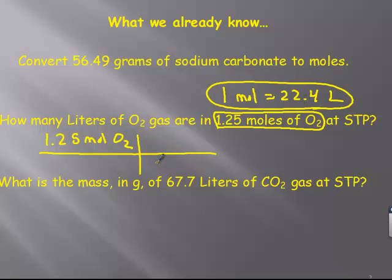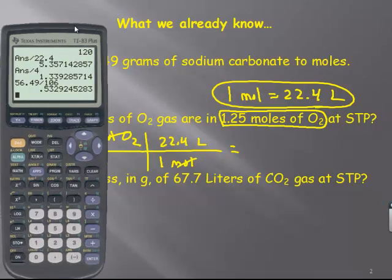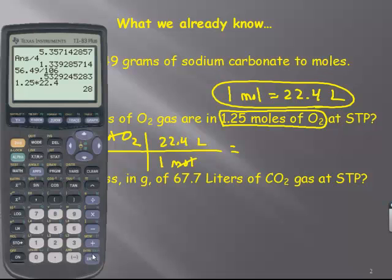So I am starting with 1.25 moles of O2, and that's going to start my conversion chart. So now I need the conversion factor. Well, I already said at STP one mole of any gas is 22.4 liters. So I'm going to say one mole of O2 is equal to 22.4 liters of O2. So the moles cancel, and you can see I have one on the bottom. So I'm just going to do 1.25 times 22.4. And I get 28.0 liters of O2 gas.